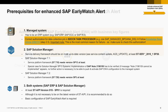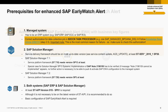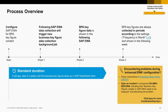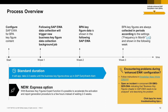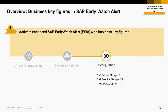Let's now have a look at the overall activation process. If you activate the Enhanced EWA, it will approximately take two to three weeks of waiting time until the business key figures show up in the EWA report. Later on, I will show you the new Express option. With this option, it's possible to accelerate the activation procedure to a few hours instead of waiting three weeks.